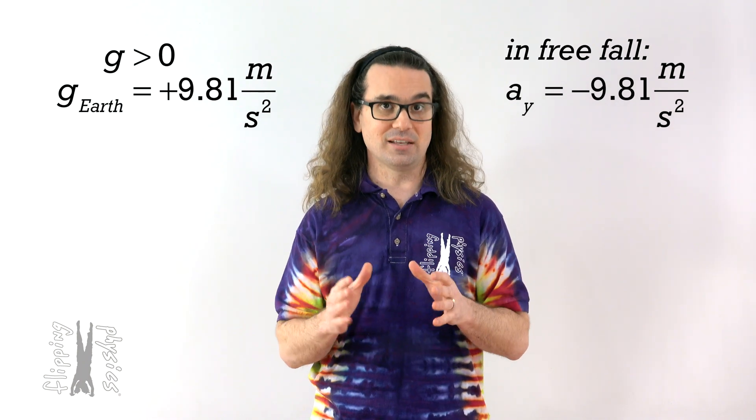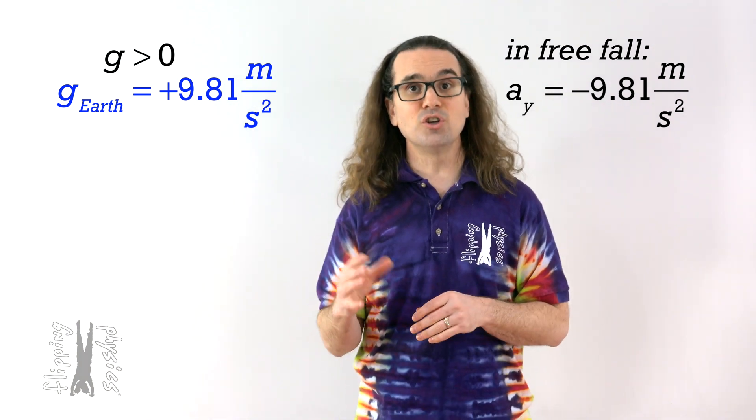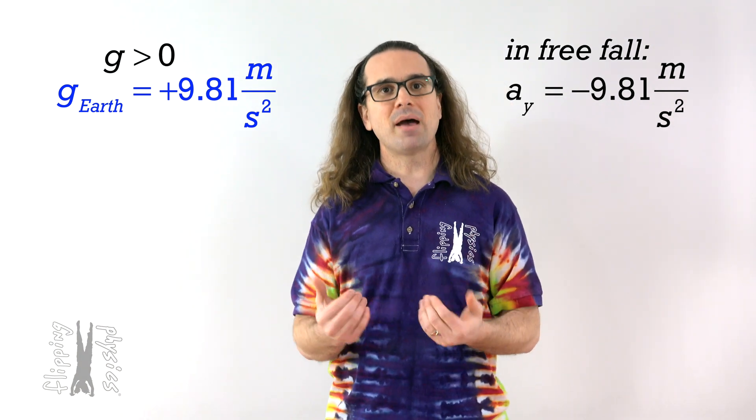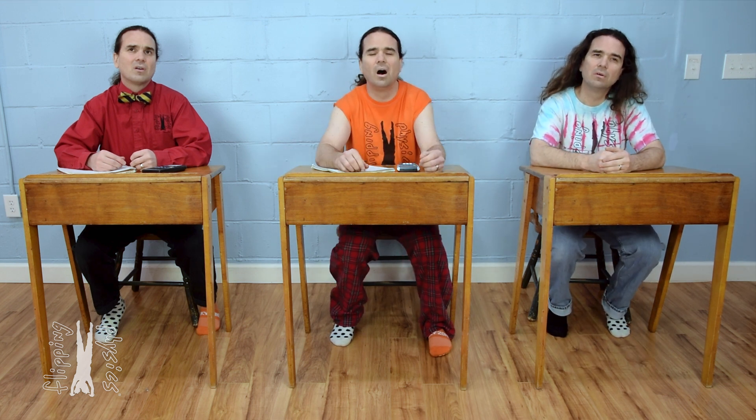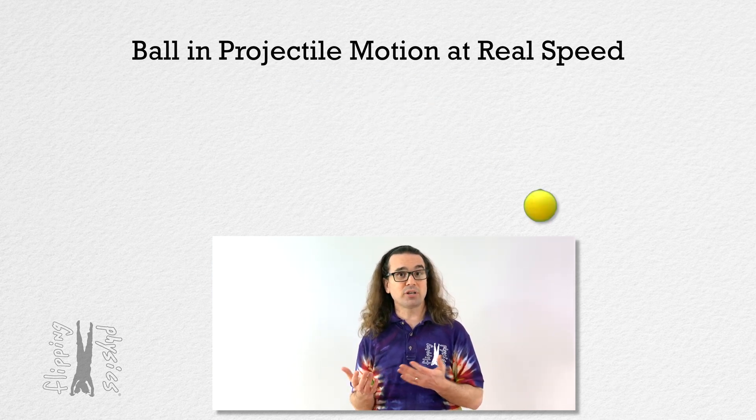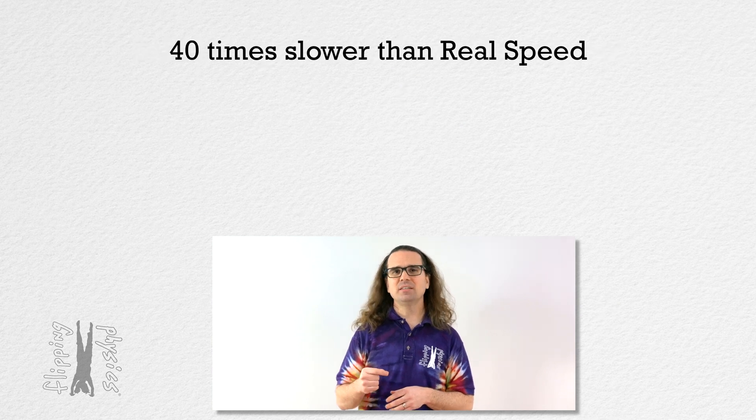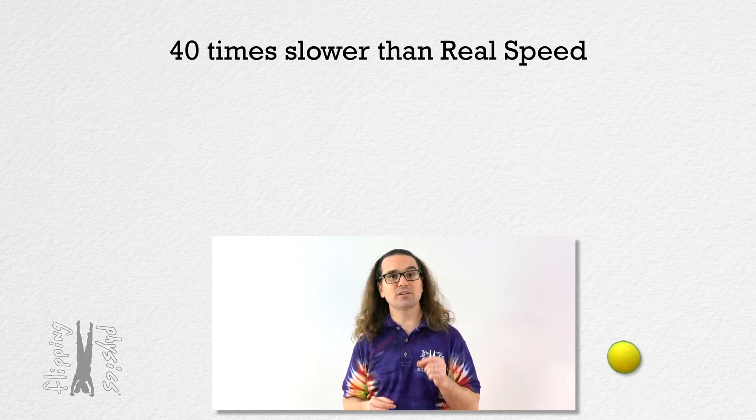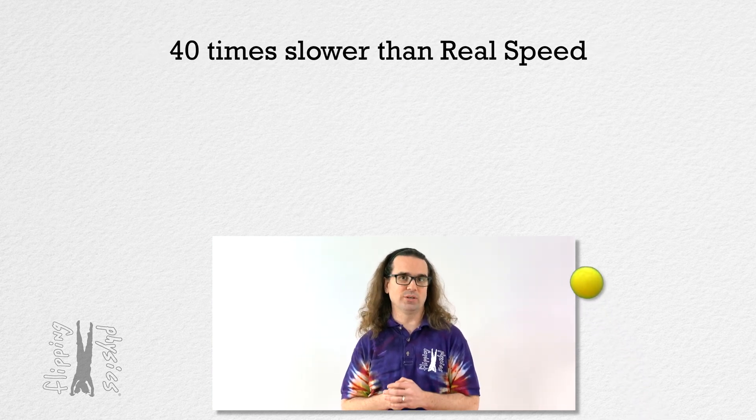It is not. Little g is positive 9.81 meters per second squared. Now that we have learned Newton's second law, we can better understand why little g equals 9.81 meters per second squared near the surface of planet Earth. Let's begin by looking at the simple example of a ball in projectile motion. This is a video of a ball in projectile motion at real speed. And this is the same video shown at 40 times slower than real speed.